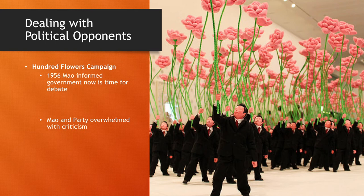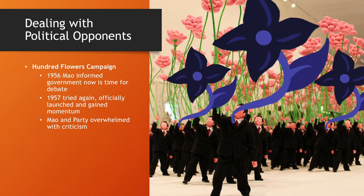Regardless, opposition was removed during this campaign. It snowballed and overwhelmed the party — even Mao himself was criticized by intellectuals — so he converted it into the Anti-Rightist Movement, saying 'these poisonous weeds have grown among the fragrant flowers.' Between 400,000 and 700,000 intellectuals were purged.